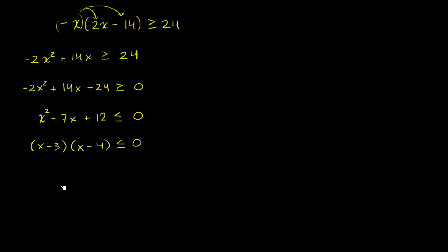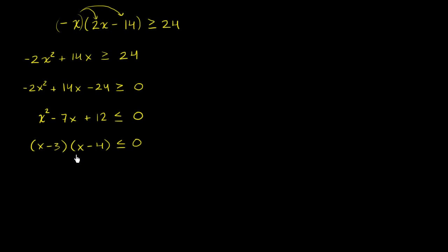Now we're going to do a little bit of interesting logic. If the product of two things is less than or equal to 0, what does that tell us? That tells us that either one or both of them is 0, or they have different signs. The only way to get less than 0 is if one is positive and the other is negative, or one is negative and the other is positive.